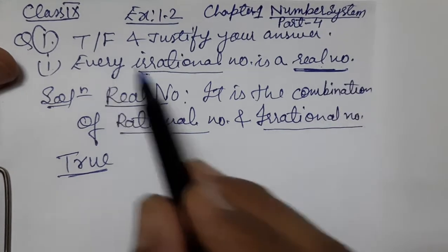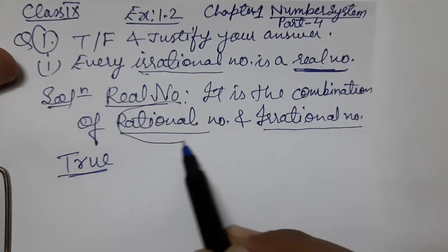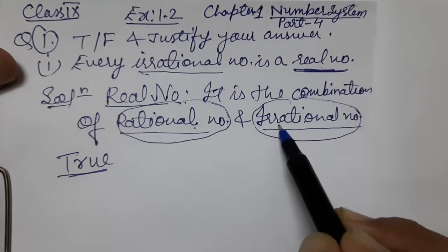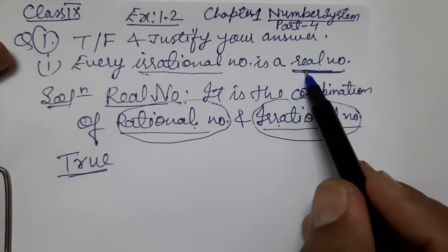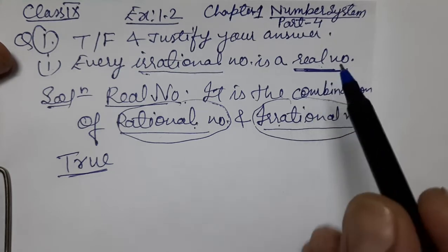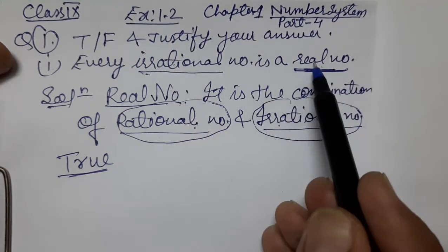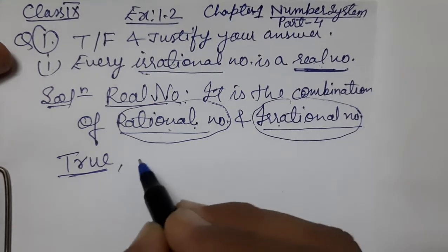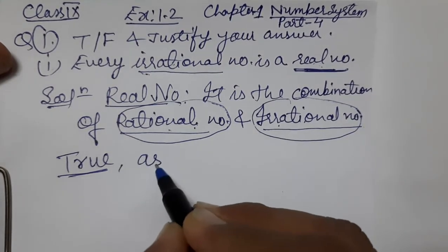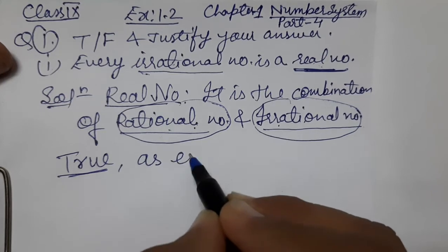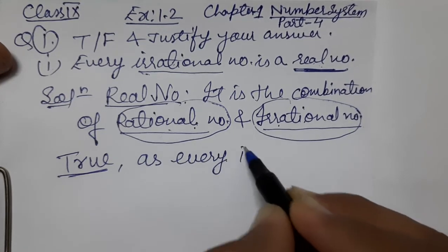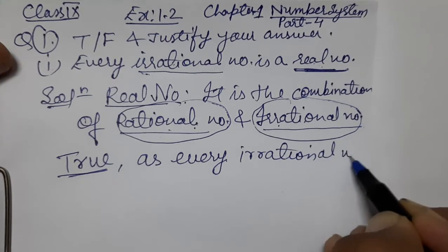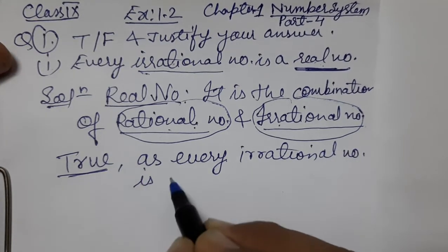Rational numbers aur irrational numbers milke real number ban rahe hain. Dono tarah ke numbers real numbers hain, toh irrational number bhi real number hai, aur rational number bhi real number hai. Since every irrational number is a real number, the answer is TRUE.